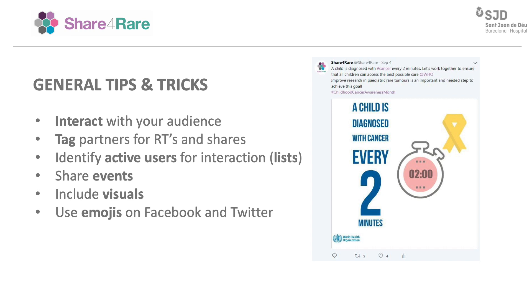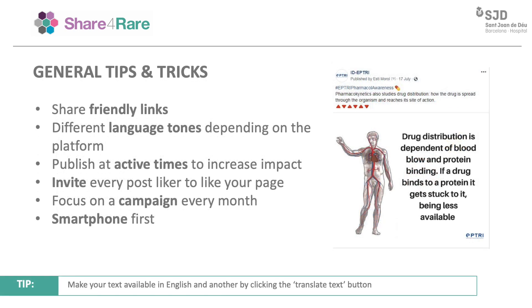In general, these useful tips will increase the scope of your social media profiles. The key point is always to interact as much as possible with your audience — tag partners, retweet, and share interesting content. Identify active users and interact with them; Twitter lists are very practical for this. Share events, mostly on LinkedIn. Use as much visual content as possible — videos, GIFs, infographics. Choose nice pictures and use emojis on Facebook and Twitter, as they are proven to increase engagement. Do not share long, messy links — shorten and customize them using Bitly, for example.